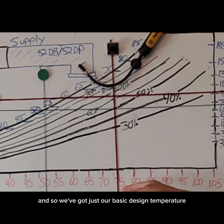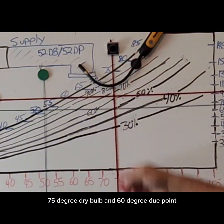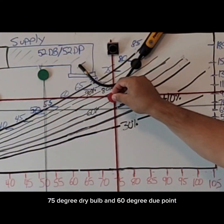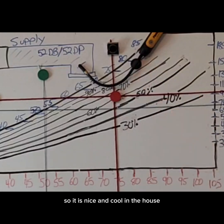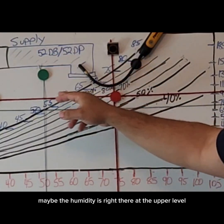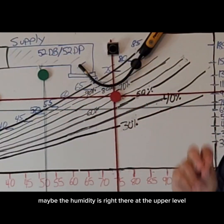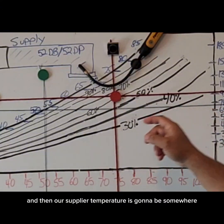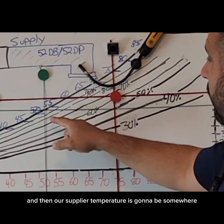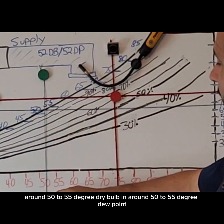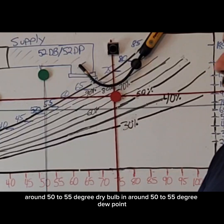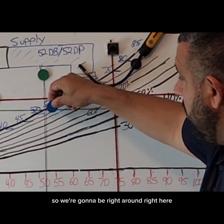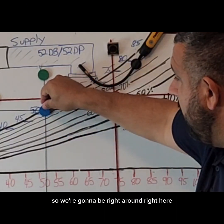We've got just our basic design temperature of 75 degree dry bulb and a 60 degree dew point. So it is nice and cool in the house. Maybe the humidity is right there at the upper level, but nothing really to be worried about. And then our supply air temperature is going to be somewhere around 50 to 55 degree dry bulb and around 50 to 55 degree dew point.